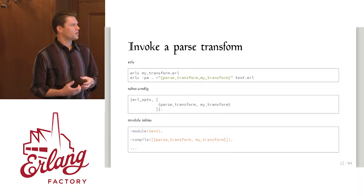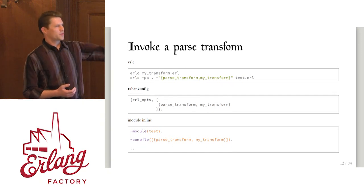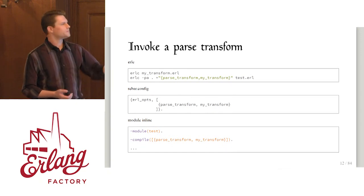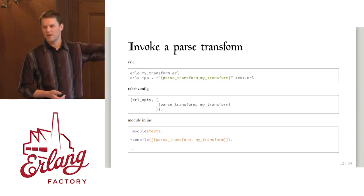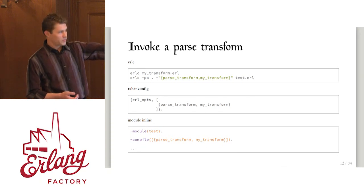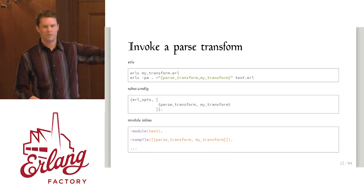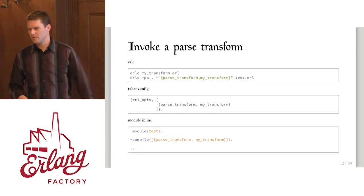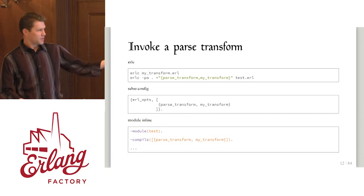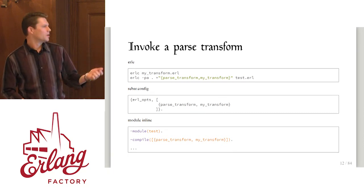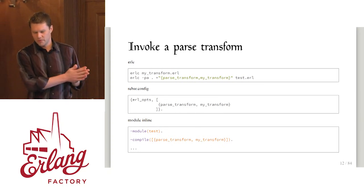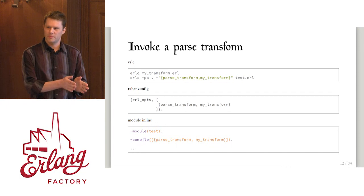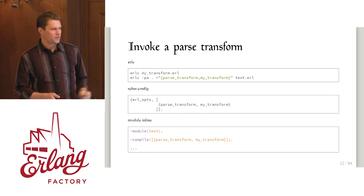You give this parse transform flag to the compiler. If you're doing this in rebar, it's quite a bit simpler — you probably have one of these in your rebar config for logger, right? Parse transform, logger transform. You can also specify the module inline, so if you don't want to run this parse transform for your entire project but just for a specific module, you put it right there in the header of your module.